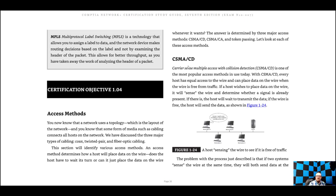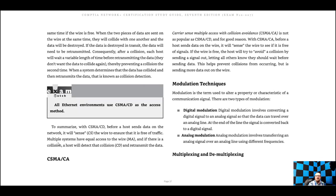CSMA/CD stands for Carrier Sense Multiple Access with Collision Detection. It's a networking technology that senses whether a signal is ready to be sent — it monitors the line, and when there's an open slot it goes ahead and sends the signal. If a collision occurs, it has the ability to resend. CSMA/CA (Collision Avoidance) is not as popular because it sends a signal to check if the line is free before sending another signal, which ties up bandwidth.